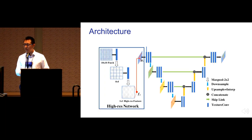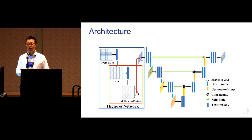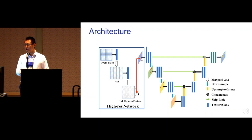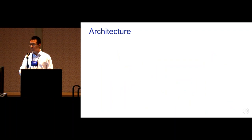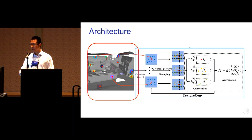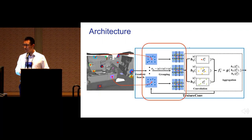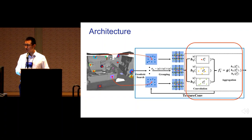For each square, we sample 10-by-10 image patches and pass through a two-layer network to get high-resolution features. We associate features to vertices in the mesh and compute vertex features through a 3D network based on the texture convolution block. In the texture convolution block, for each point, we sample a square neighborhood with several vertices, split it by 3-by-3 grids, associate weights to each point based on which grid they belong to, and aggregate features with max pooling.